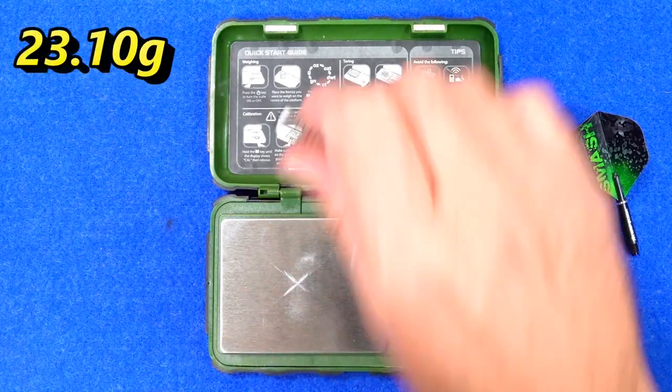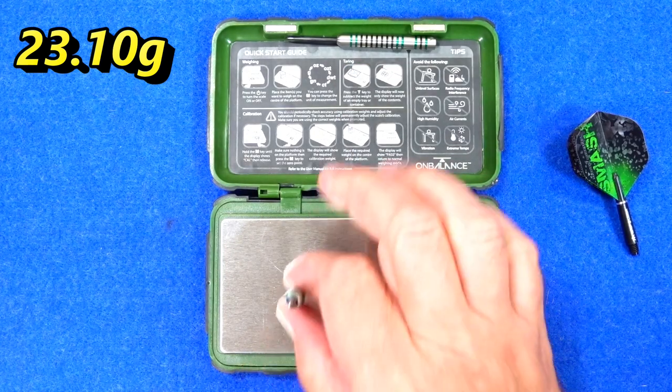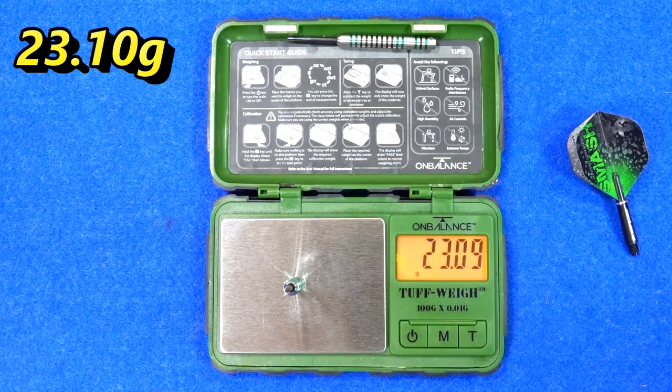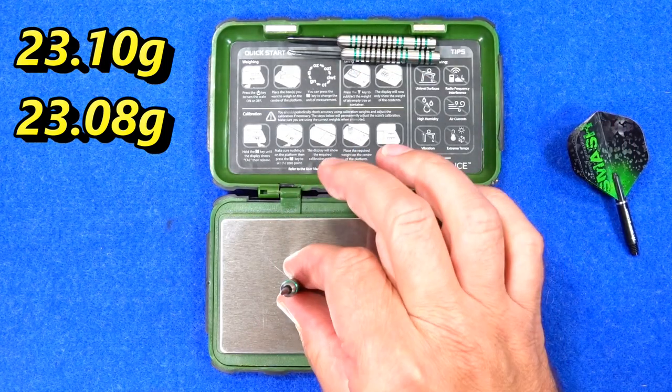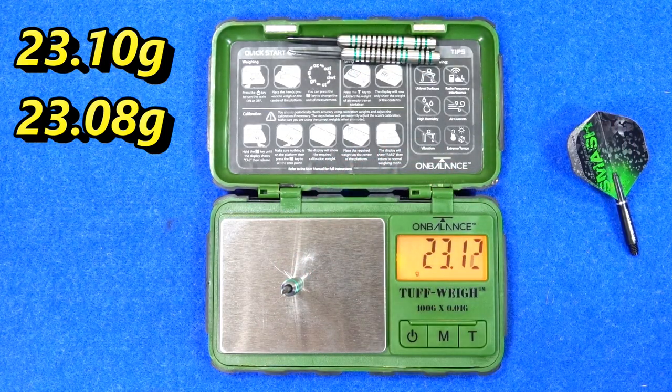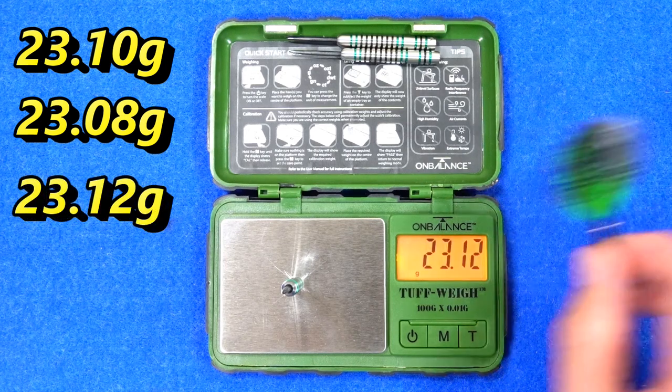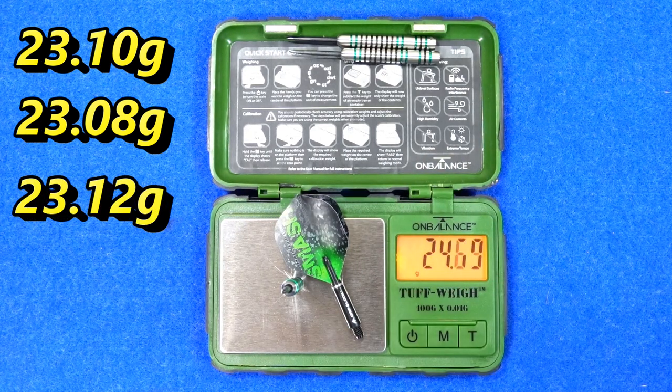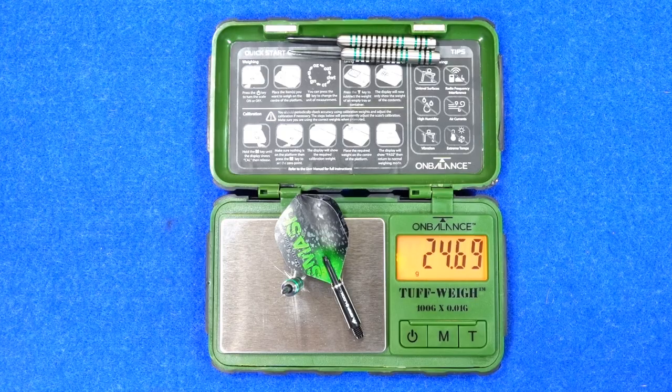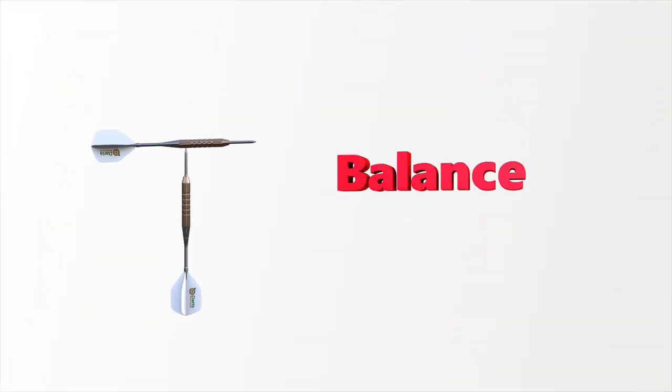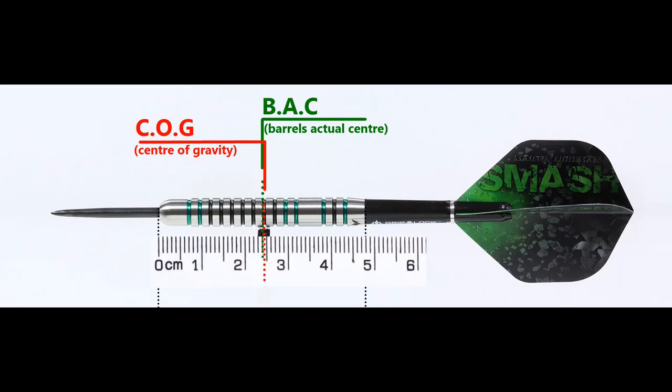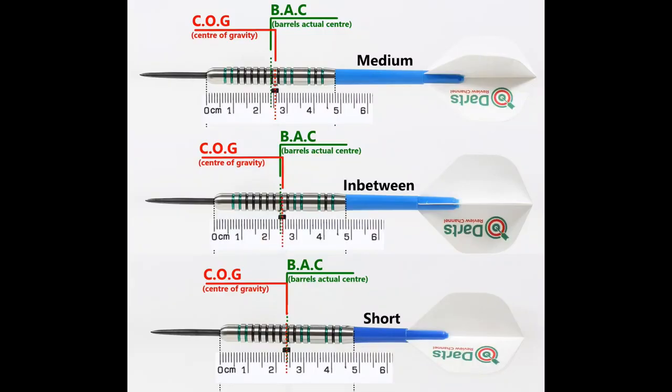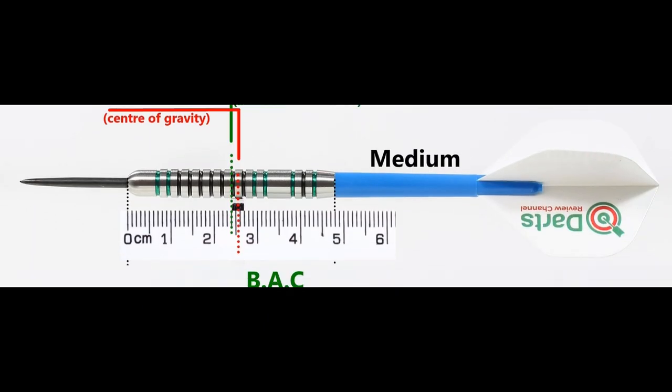23.1 grams. 23.08 grams. 23.12 grams. Full setup, 24.69 grams. Here's the balance with nothing attached, and with the supplied setup. And this is the balance with medium, in between short nylon stems and standard flights.